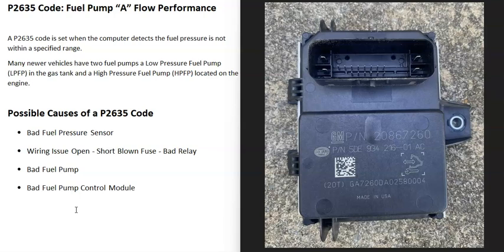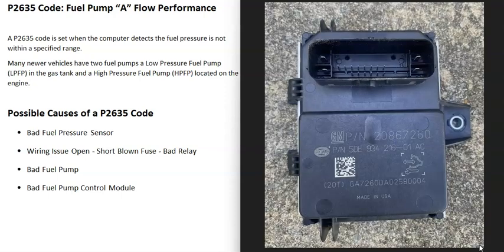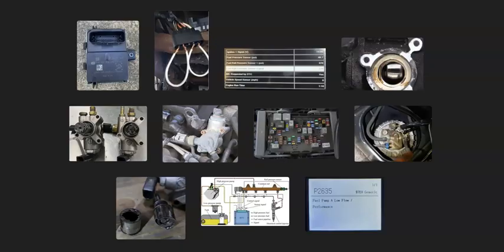The last possible cause is a bad fuel pump control module, although this isn't too common with a P2635 code. You can get a multimeter and check all the wiring going to the fuel pump control module and the wires going to the fuel pump. Some people jumper the fuel pump — since those pumps are usually 12 volts — and if it kicks on, they know the issue is with the control module, though I don't recommend that method. It's best to get a wiring schematic for your particular vehicle, check all the wiring to the control module and back to the fuel pump, and if everything checks out, then there may be an issue with the fuel pump control module itself.